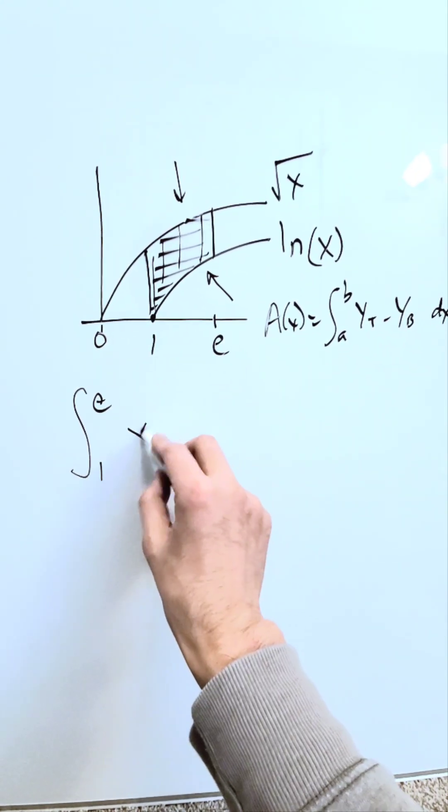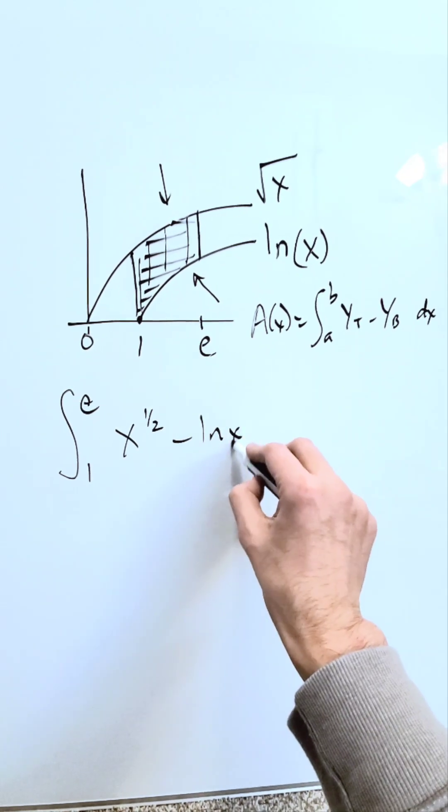I have a top boundary function root x, which I'm writing as x to the power of 1 over 2, minus the lower boundary curve dx.